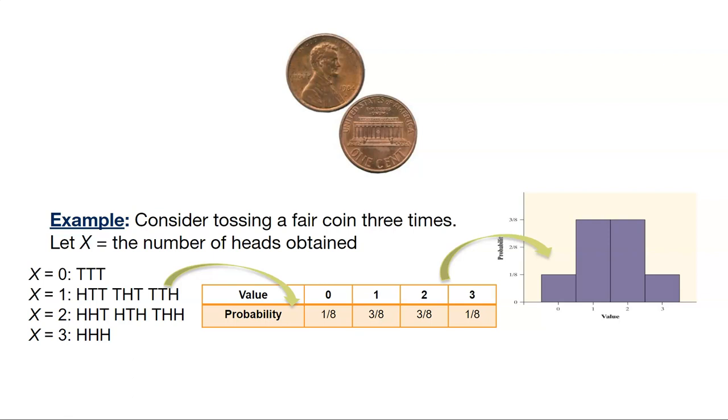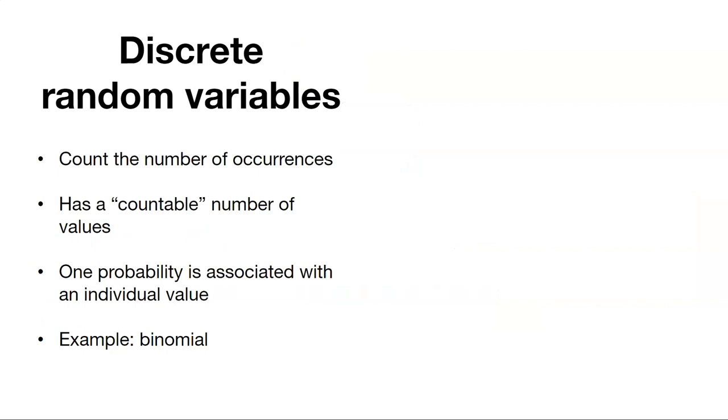The random variable we can depict this way. What's the probability that we're seeing here on the Y axis for each of the different values of X? What we see on the X axis.